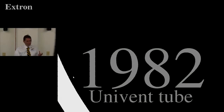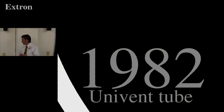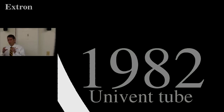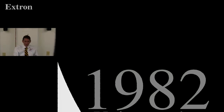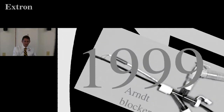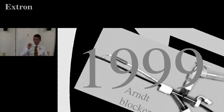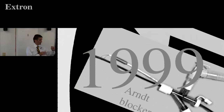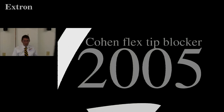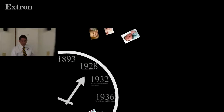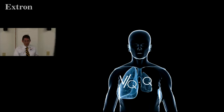People were using Fogarty catheters in the 80s. Then in 1982 Inouye and colleagues introduced the Univent tube — the first single tube with a bronchial blocker incorporated into it. The Arndt bronchial blocker is a fiber-optic-guided blocker: you put the fiber optic down the bronchus you want, the blocker is looped around it, then slide it off the end of your fiber optic scope into the correct bronchus. There's also the steerable Cohen blocker introduced in 2005.